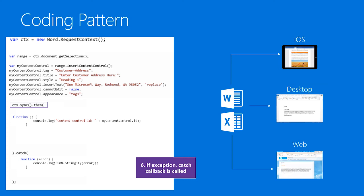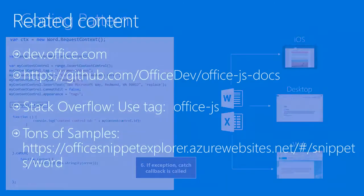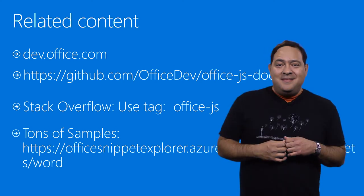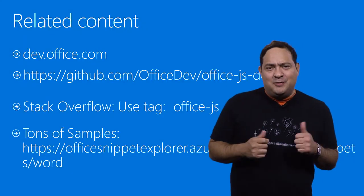You will see that this is the pattern for all the APIs we are exposing, and you can get to the examples and play with the other objects. You can find a ton of great documentation and examples in GitHub repositories. Make sure to send us feedback on what APIs you would like to see in the future, or any issues you find with our APIs using Stack Overflow. Thank you very much for listening and happy coding.